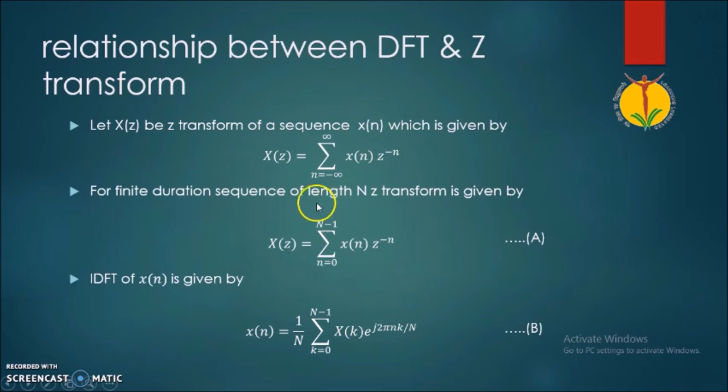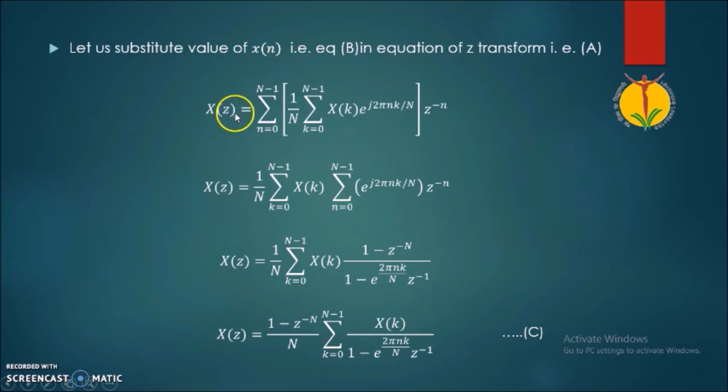Let's see what happens when we substitute this value. We have the standard formula for the Z transform and we are substituting the value of X(n) in this equation. In the next step we are just rearranging the summations over here.